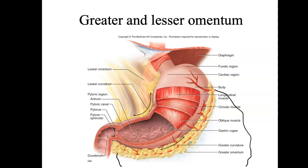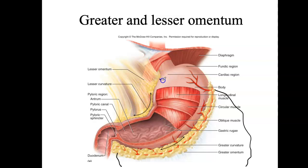The lesser omentum is attached onto the lesser curvature. Think of the stomach as a little bean: the outside of the bean is the greater curvature, and the inside is the lesser curvature. On the lesser curvature would be another fatty, thin, apron-like structure called the omentum. On the stomach itself, we distinguish different locations. The first one is the cardiac region — around here where the esophagus enters — that's the cardiac region.